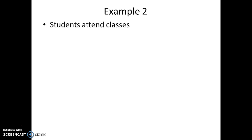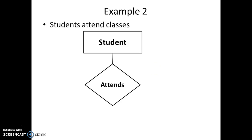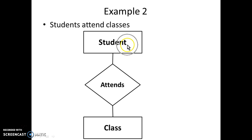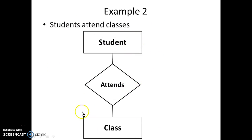Let's take another example: 'student attends class.' Student and class are the entities — you can also use the plural forms 'students' and 'classes' — and 'attends' is the relationship. You can add attributes to the student entity, attributes to the class entity, and attributes even to the 'attends' relationship. Yes, attributes can be added to both an entity and a relationship.